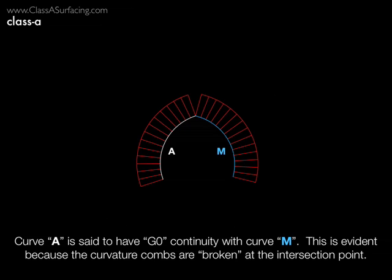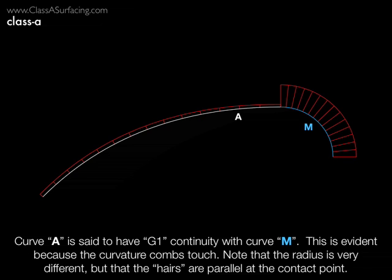If two curves aren't tangent to one another, their curvature combs will appear broken and won't touch one another at their extremities. This can be hard to see in some cases, so a curvature graph might need to be amplified to really see that. Here we can see that curve A is tangent to curve M because the vertical spines on the porcupine analysis are parallel.